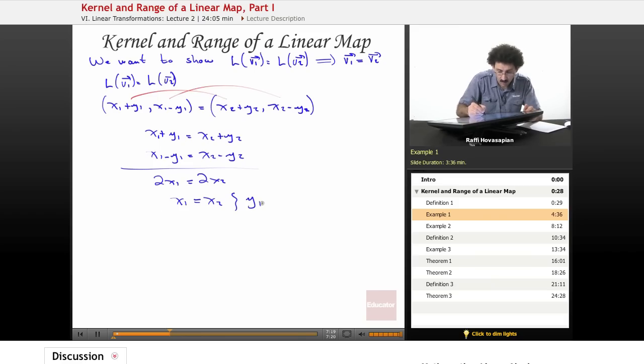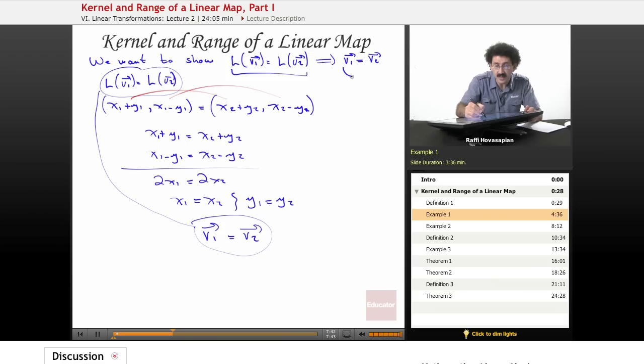When I put these back, I also get y1 equals y2. This means that V1, which is (x1, y1), is equal to V2. So by starting with the supposition that this is the case, I've shown that this is the case, which is precisely what this implication means.